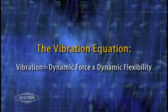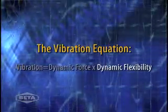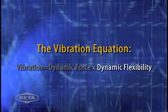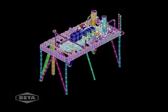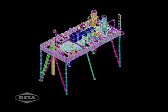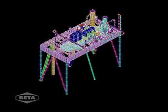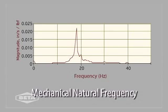Dynamic flexibility is the other factor in the vibration equation. Dynamic flexibility refers to the flexibility at different frequencies — a support might be stiff at one frequency and very flexible at another. The frequency at which a structure attains its maximum flexibility is referred to as its mechanical natural frequency, or MNF. Every system will have at least one MNF; it can have several.